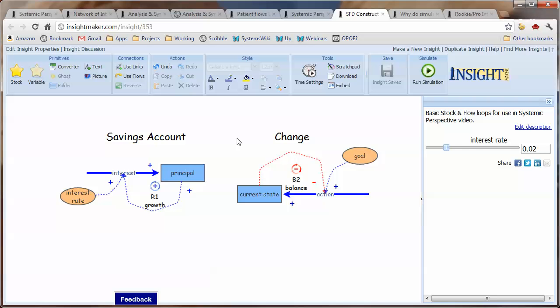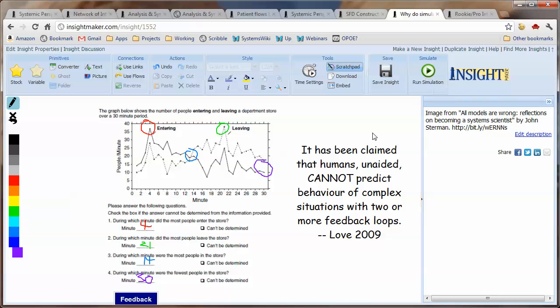If I can develop rich pictures or causal loop diagrams or simulation models, why is it that I do simulations when causal loop diagrams and rich pictures are far easier? Well, it's been said that humans unaided cannot predict the behavior of complex situations with two or more feedback loops.